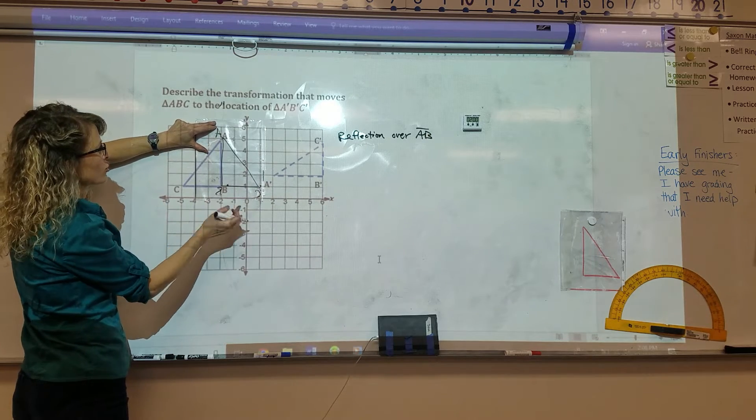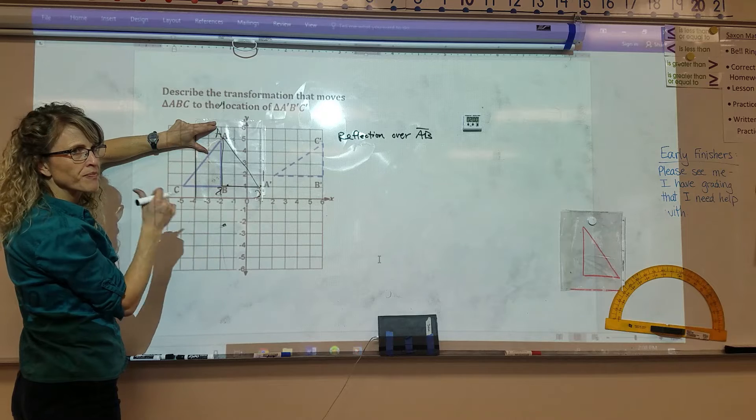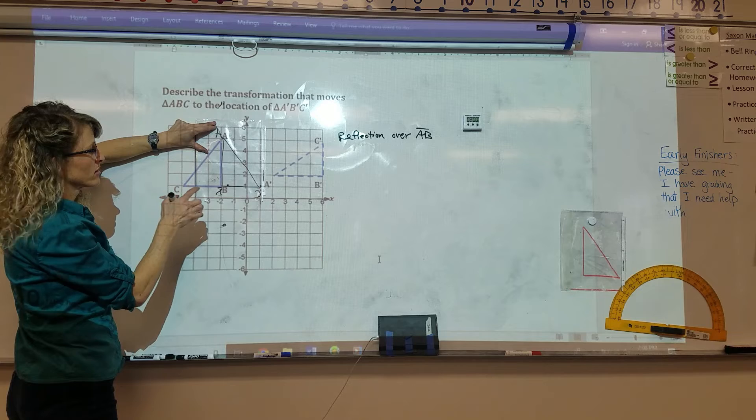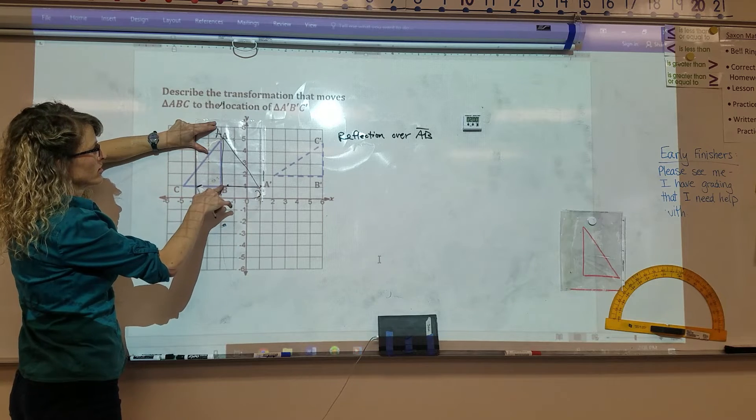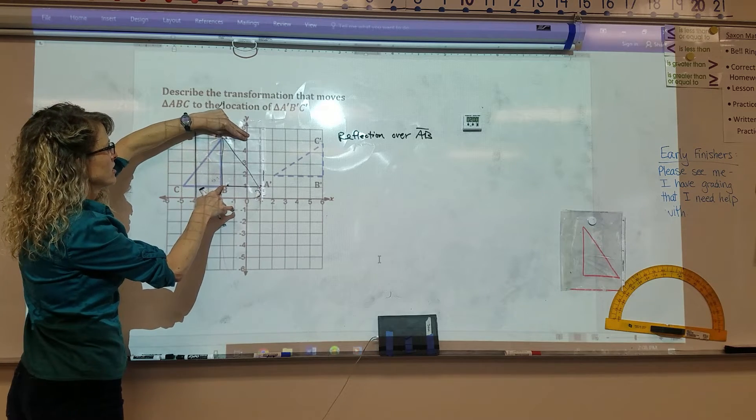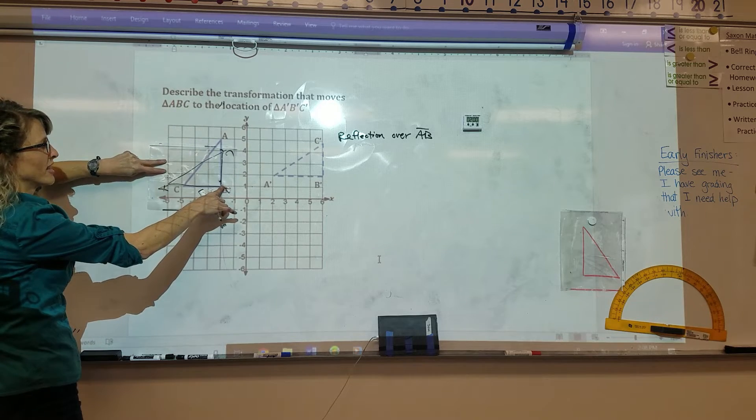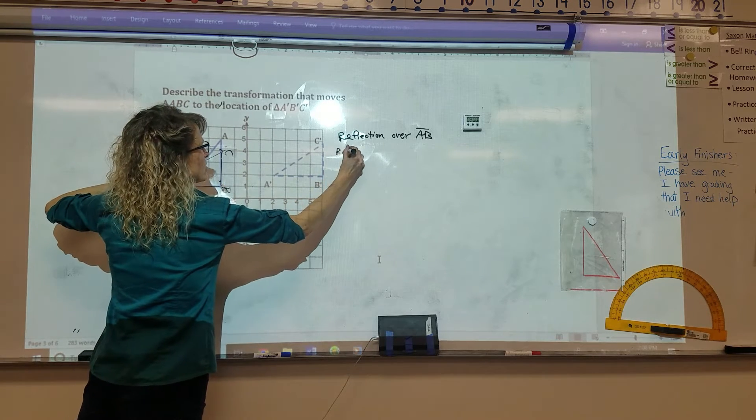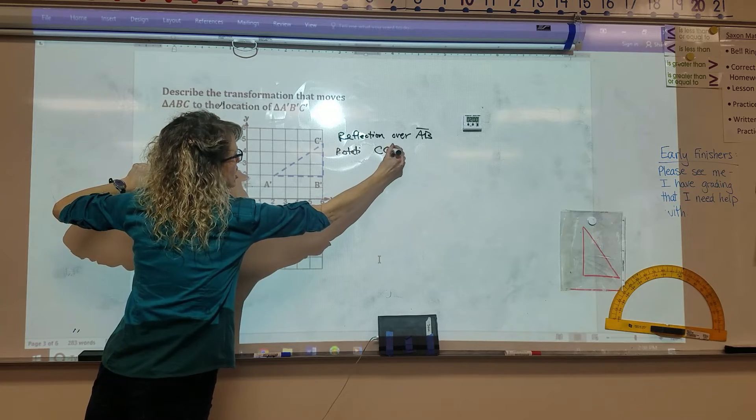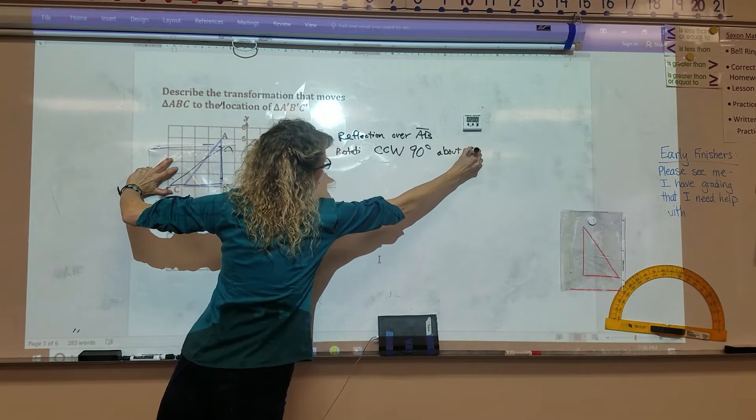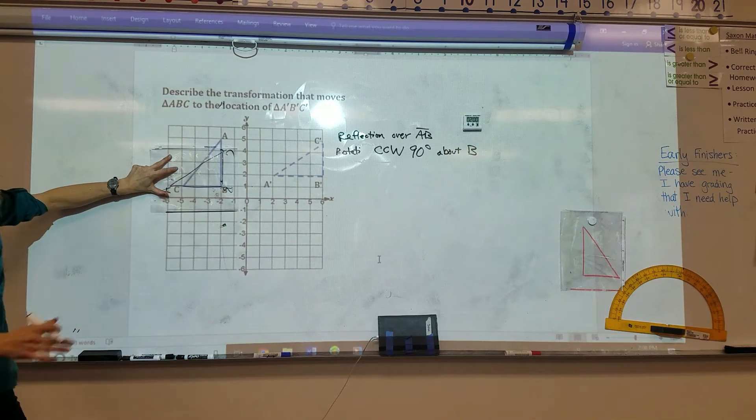Let's get another one. Joseph? Rotation. Rotation. Great. About what point and what direction? Hold on to B and then move to the left. All right. I like that. So B and we're going to go left. How far? 90 degrees. I like it. Rotation counterclockwise 90 degrees about B.